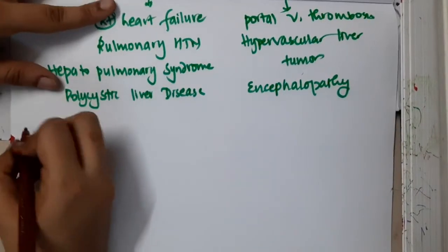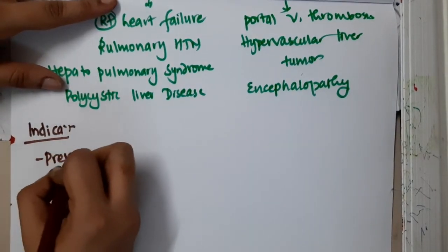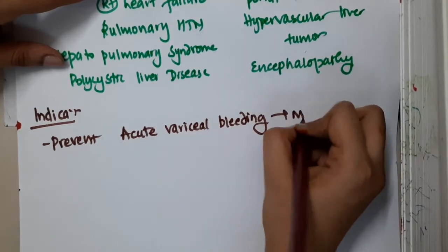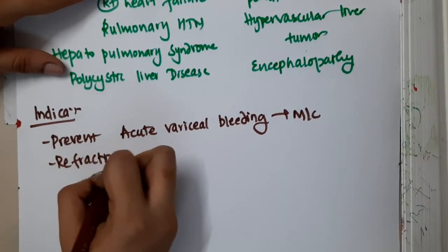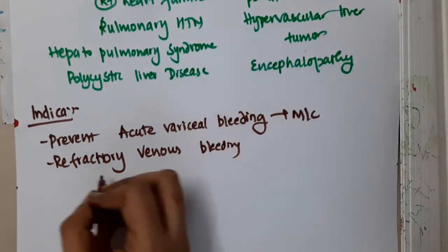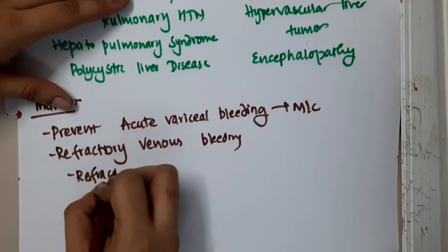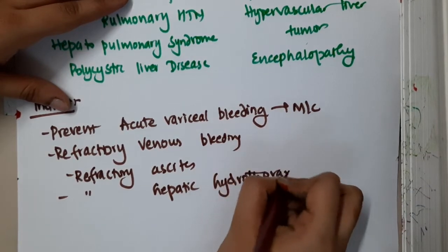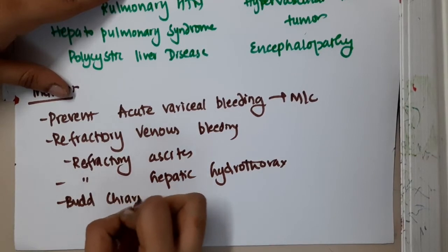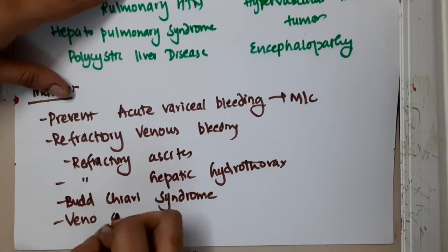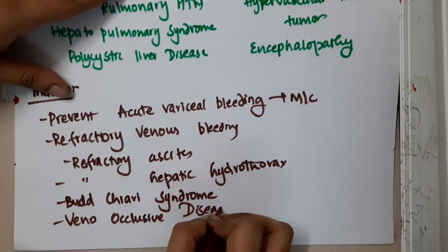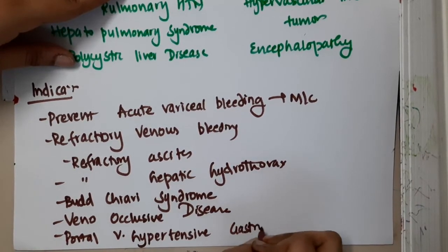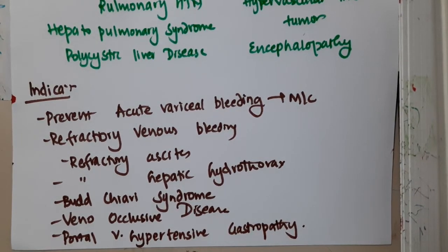The indications for TIPS include: number one, to prevent acute variceal bleeding — this is the most common indication. It is also used for refractory variceal bleeding, refractory ascites, refractory hepatic hydrothorax, Budd-Chiari syndrome, veno-occlusive disease, and portal hypertensive gastropathy. These are the main indications of transjugular intrahepatic portosystemic shunt.